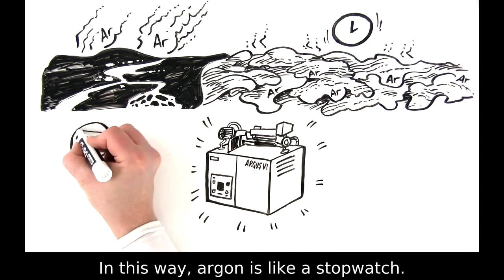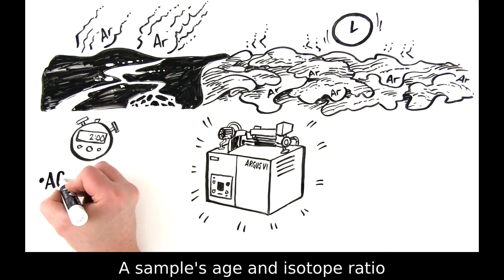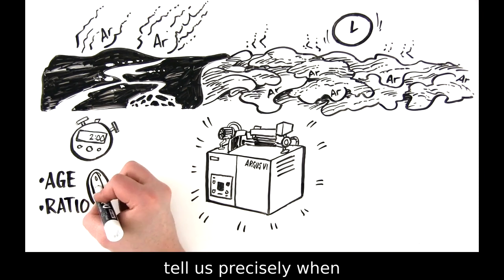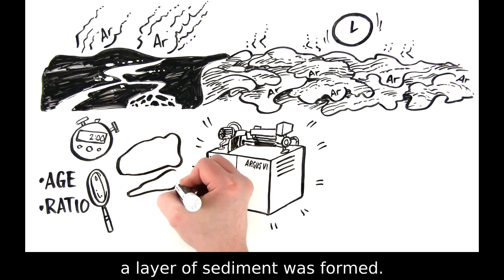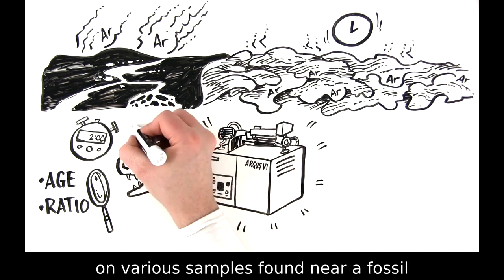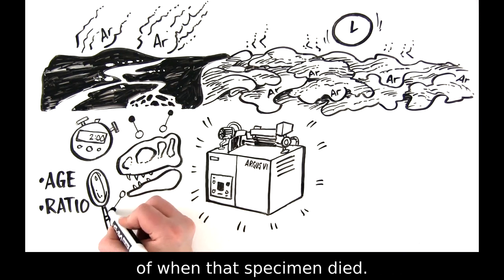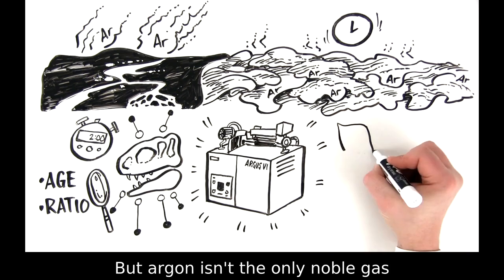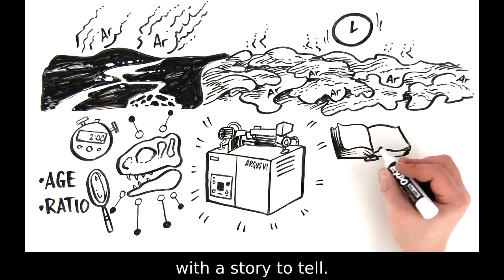In this way, argon is like a stopwatch. A sample's age and isotope ratio tell us precisely when a layer of sediment was formed. Performing AR-AR dating tests on various samples found near a fossil gives us a rough idea of when that specimen died.